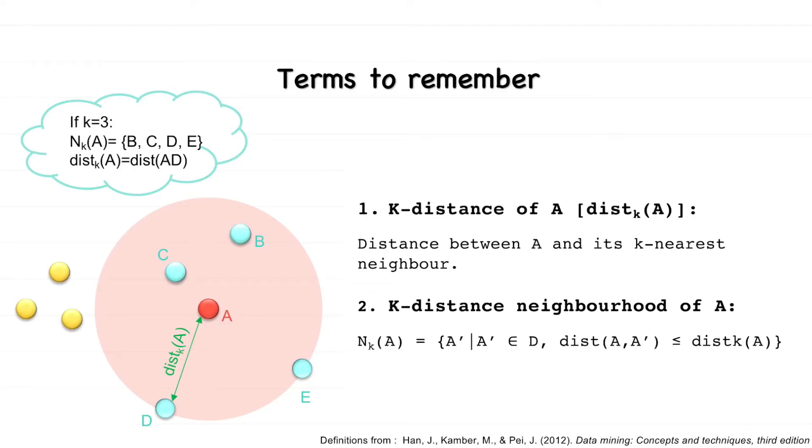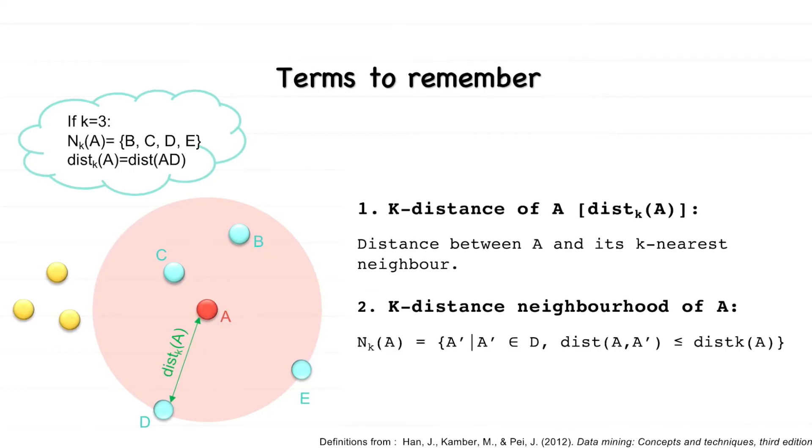Please note that it is not necessary that the set Nk must have k points. It could have more than k points in a case where multiple points are at an equal distance from the point A.